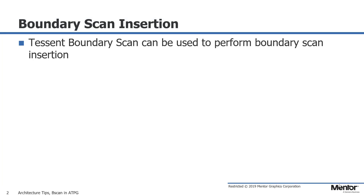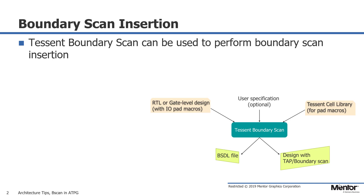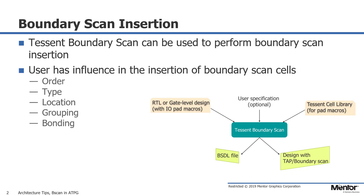Tessent boundary scan is a product that can be used to perform test access port (TAP) and boundary scan insertion. A design, either RTL or gate level, can be utilized which instantiates the pad IO macros. The Tessent cell library that describes these pad IO macros needs to be read in. The user has influence while performing the boundary scan cell insertion by providing the order in which the boundary scan cells need to be stitched, the type of boundary scan cell to be used, and the location of where these boundary scan cells need to be present.